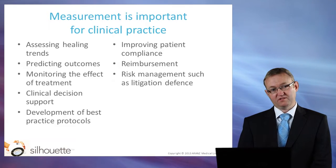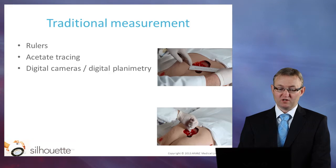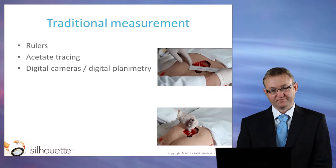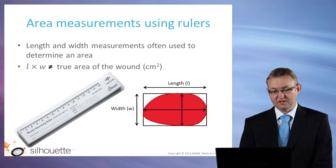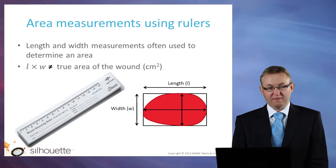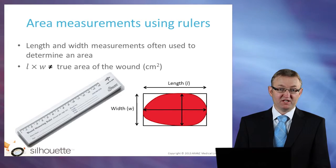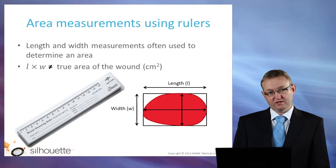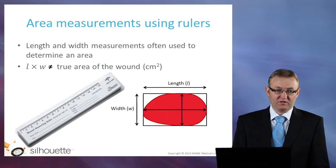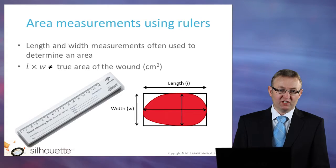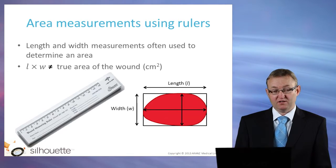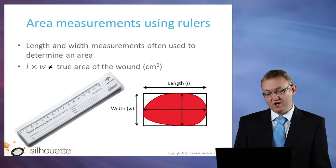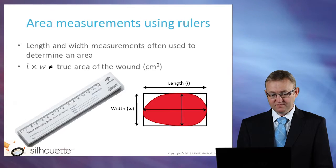So what are some of the traditional methods for measuring wounds? Well, here we're really talking about rulers, acetate tracing, and also digital planimetry using digital cameras. Rulers are probably the most common way of making a wound measurement because disposable rulers are cheap and very easy to use. Most commonly, a ruler is used to measure the length and width of a wound. The length times width gives you an area of a rectangle, and so it will be larger than the area of a wound, as you can see in the diagram. The length times width is giving you the area of a box surrounding the wound.